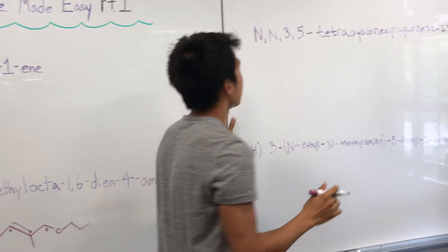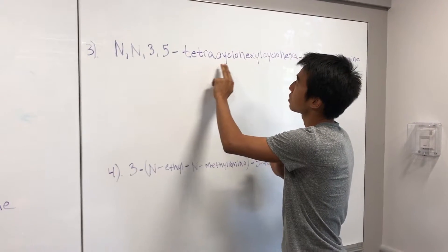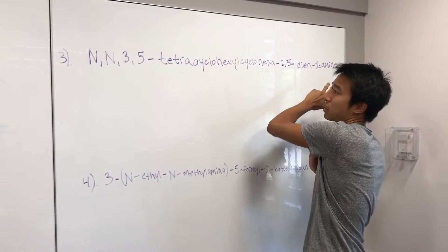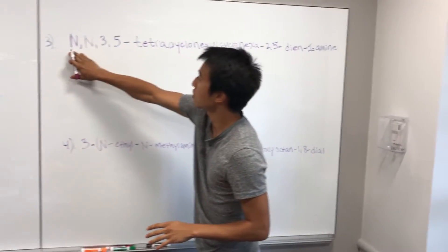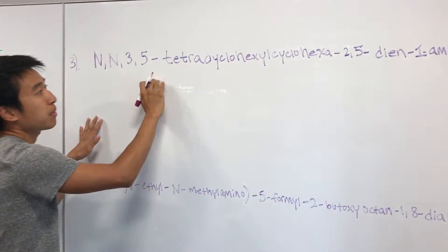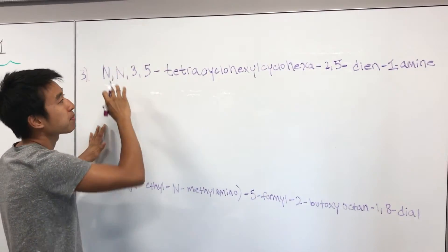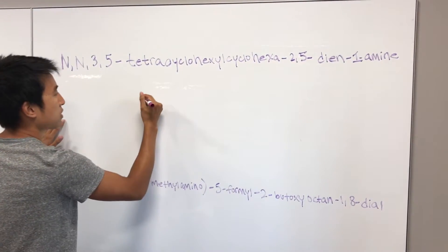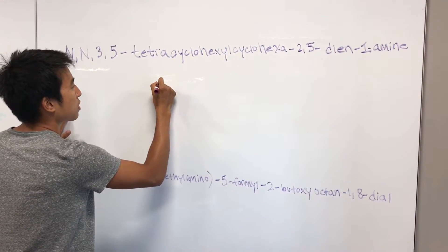Alright, here we go, problem three. So we have N,N,3,5-tetra-cyclohexyl-cyclohexa-2,5-diene-1-amine. Alright, that's a big name. So we know right away that nitrogen's special, nitrogen's special, carbon-three, carbon-five are all special. What's special about them? There's four cyclohexyl groups, one on each of them. And our parent chain is what? Cyclohexa. So that's a six-membered chain that's in a ring form.